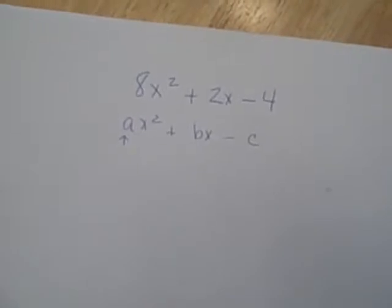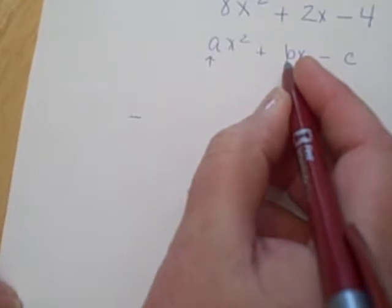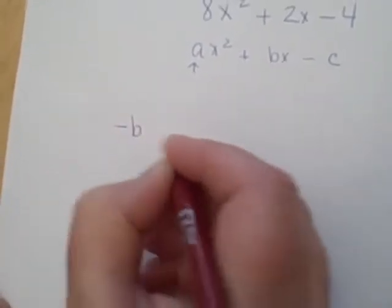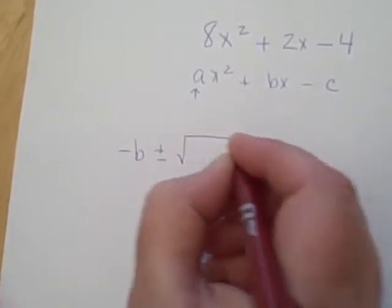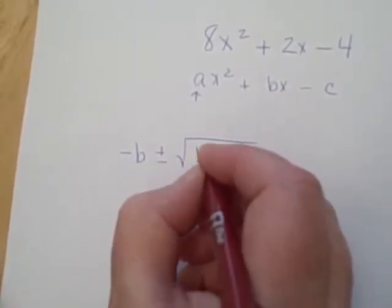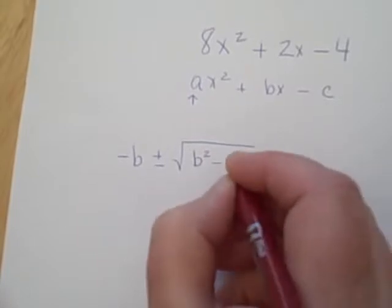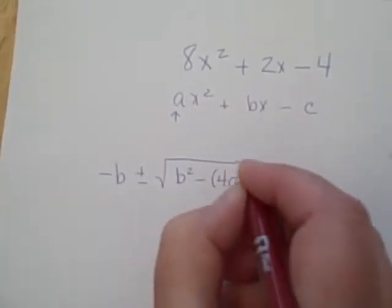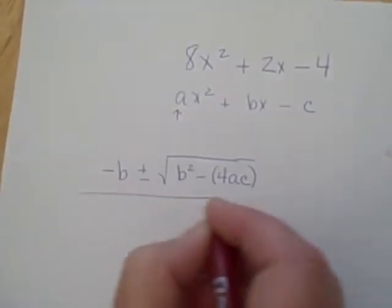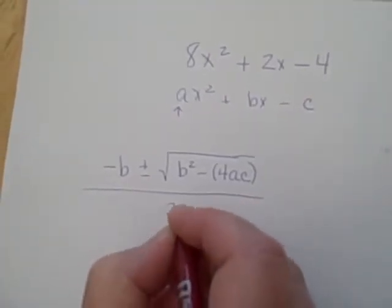So using these three values, we can solve for what x is as this parabola crosses the x-axis. And it's always exactly the same equation. Your equation is the opposite of b, plus or minus the square root of b squared minus 4ac, and all of that has to be divided by 2 times a.